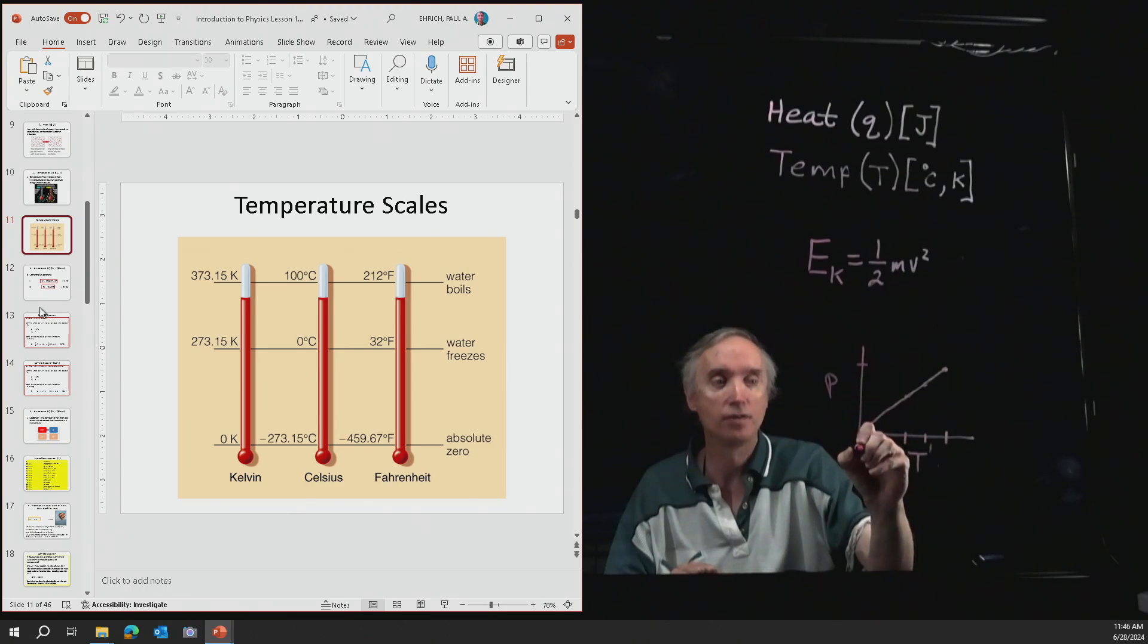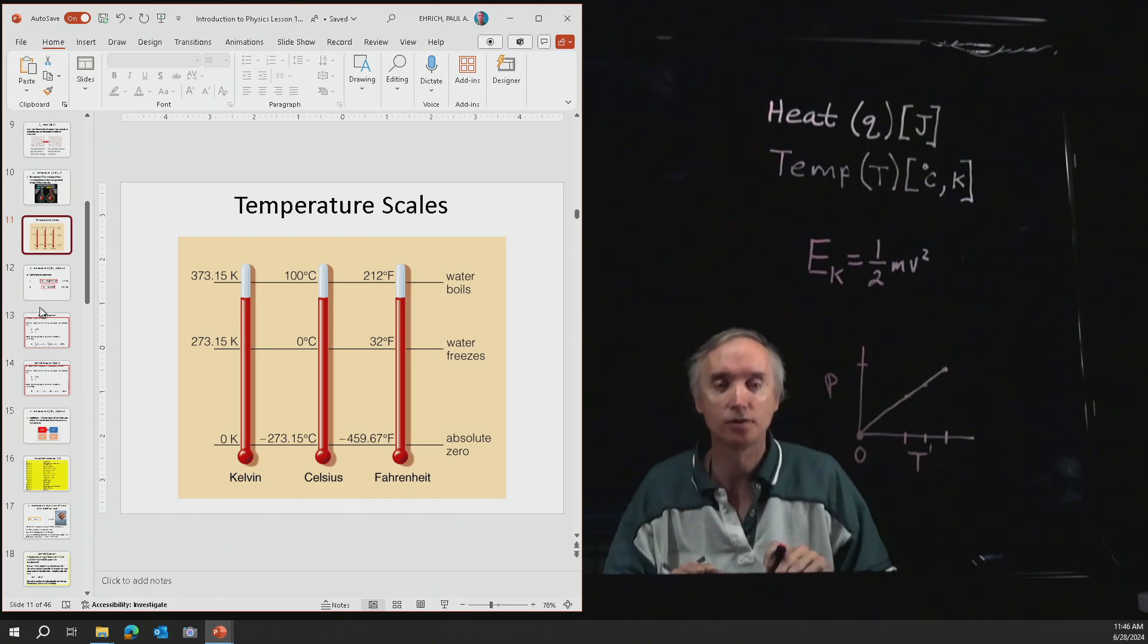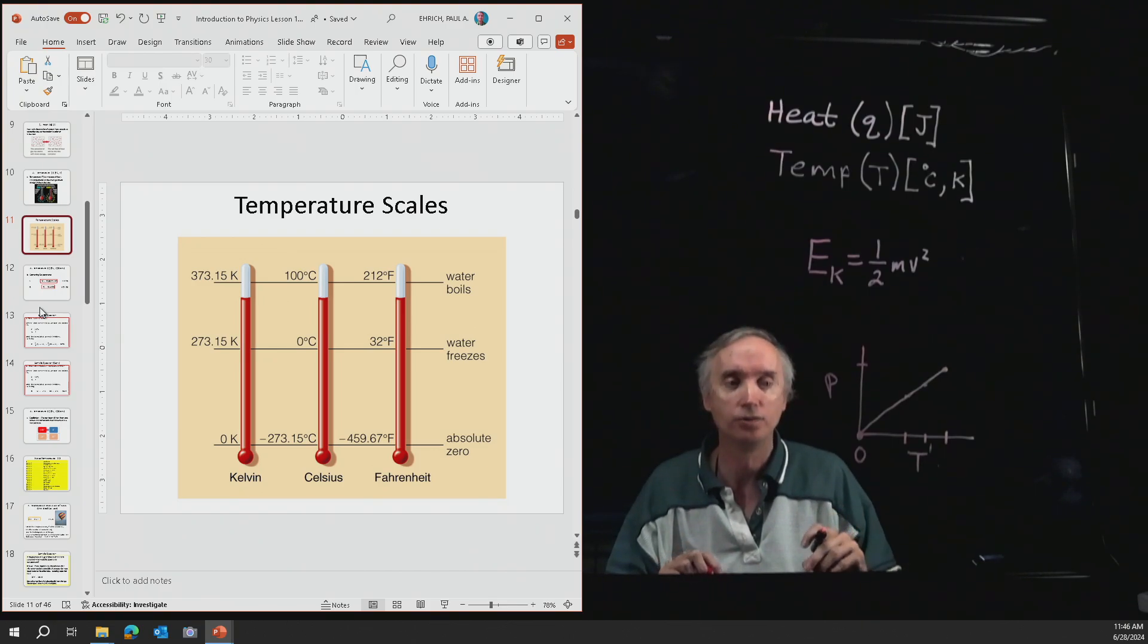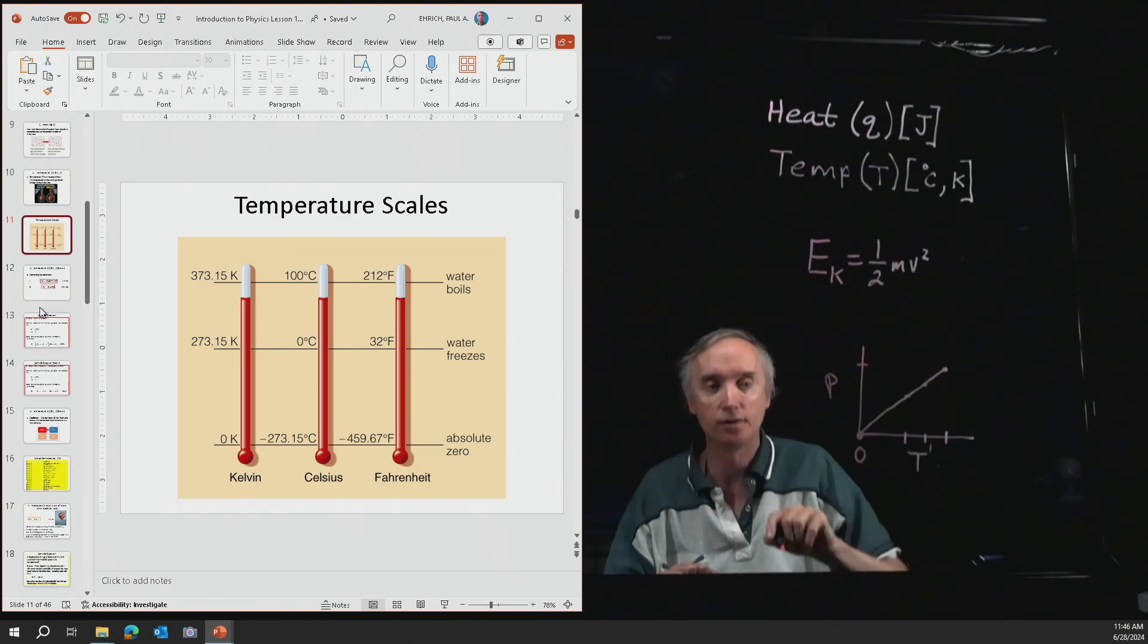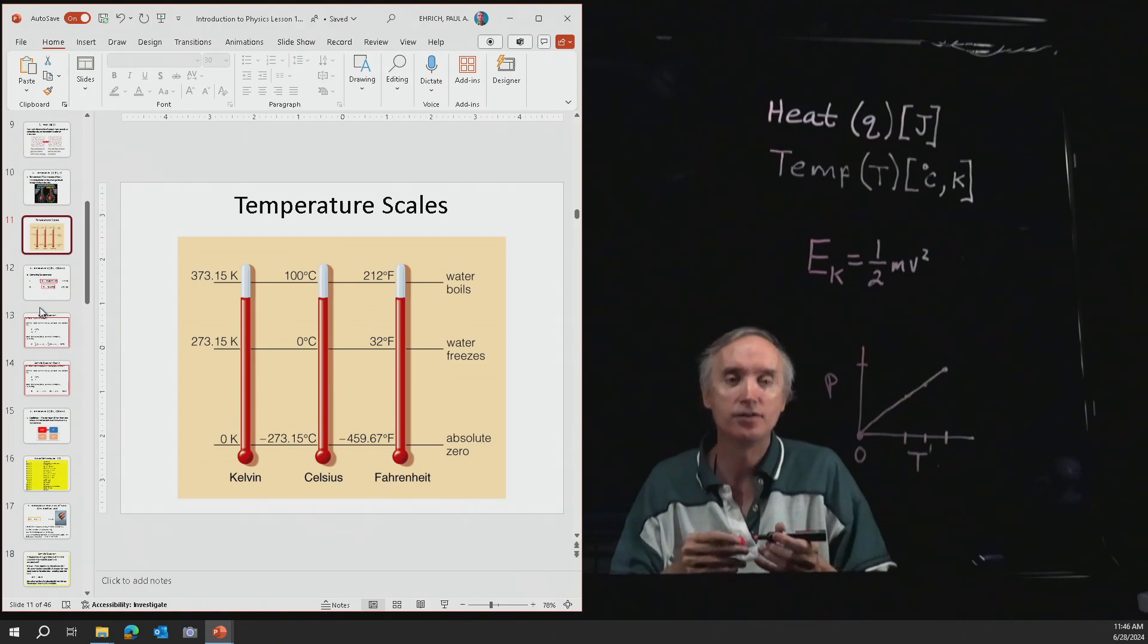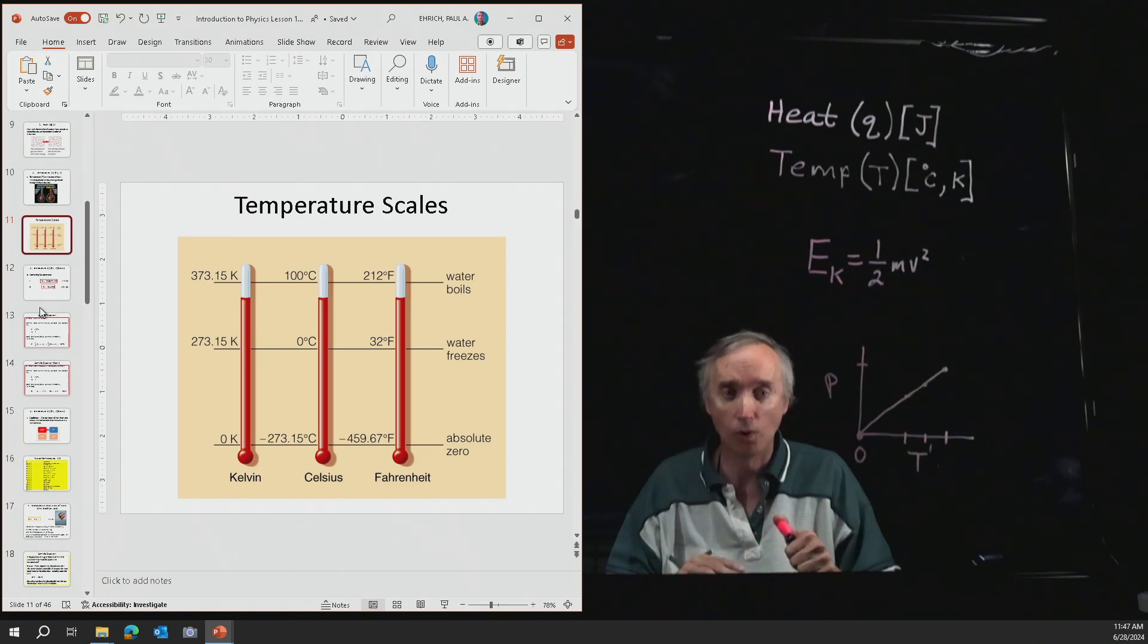Let's call this 0 Kelvin, absolute 0, so that you can't make anything colder than absolute 0. And as you can see, that turns out to be about negative 273.15 degrees Celsius, or somewhere in the neighborhood of negative 450 degrees Fahrenheit.